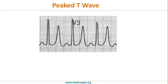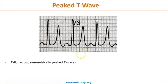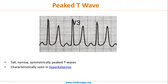Peaked T waves are basically tall, narrow, and symmetrical. They need to be differentiated from hyper acute T waves, which we'll cover next. These peaked T waves — narrow, tall, and symmetrical — are characteristic of hyperkalemia. So peaked T wave, both in MCQ as well as ECG questions, is characteristic of hyperkalemia.